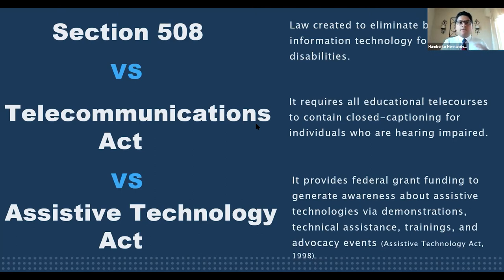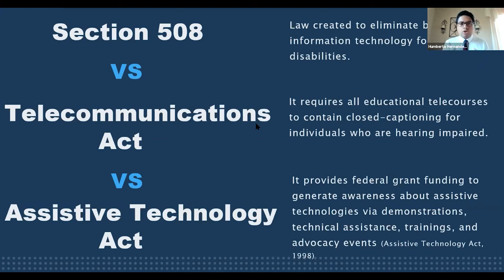The Telecommunications Act is enforced by the FCC and requires all educational telecourses to contain closed captioning for individuals who are hearing impaired, including content streamed over the internet. The Assistive Technology Act provides federal grant funding to generate awareness about assistive technology via demonstrations, technical assistance, trainings, and advocacy events. Each state is mandated to provide support to customers, their families, and interested professionals to increase access to and awareness of AT devices and services. Therefore, federally funded assistive technology trainings are available for faculty, administrators, and staff in higher education settings via local centers of assistive technology.